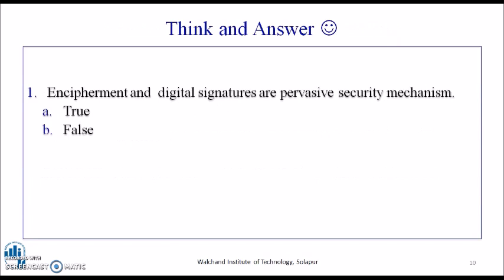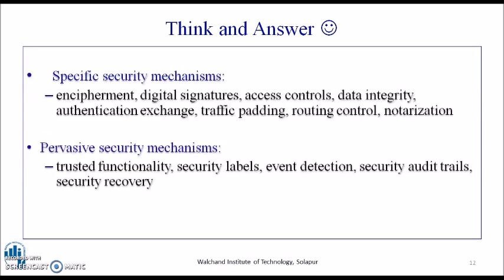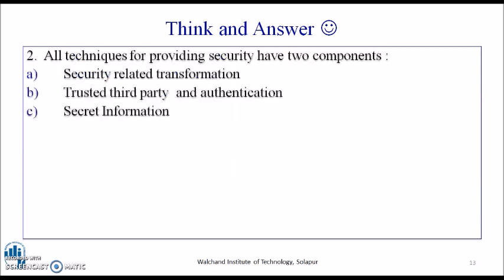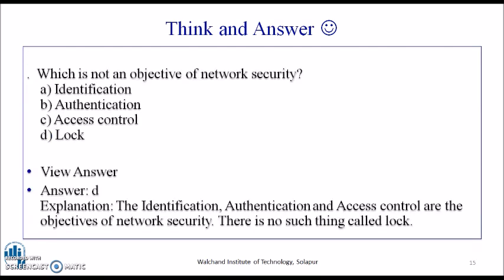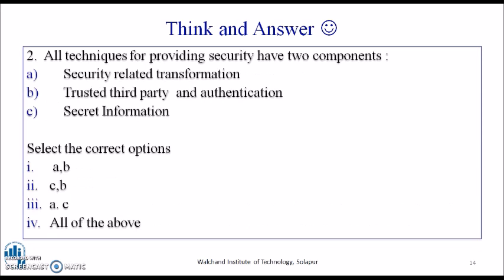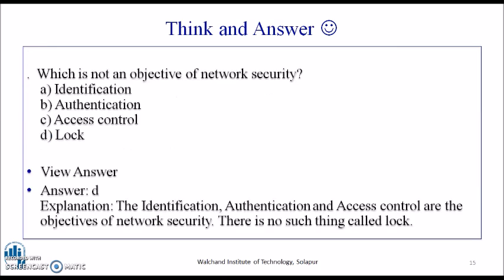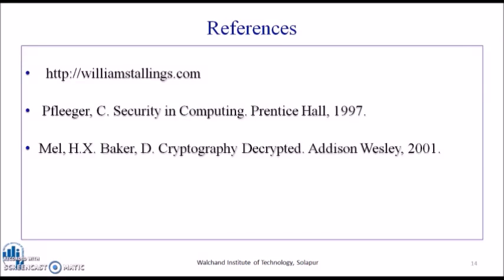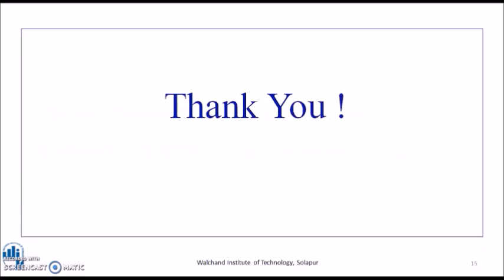Students are asked to pause and answer: Are encipherment and digital signatures pervasive security mechanisms? The answer is False — they are specific security mechanisms. Second question: All techniques for providing security have two components — security-related transformation and secret information — the correct answer is both A and B. Third question: Which is not an objective of network security? The answer is D. References for additional content are provided, and thank you for your patient hearing.